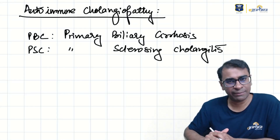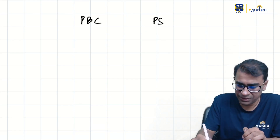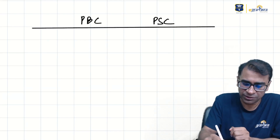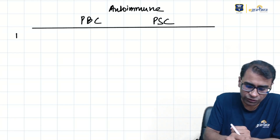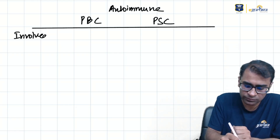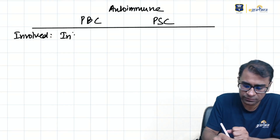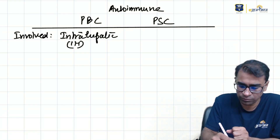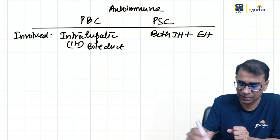Let's discuss these two in table form. Both PBC and PSC are autoimmune diseases. The involved part in PBC is the intrahepatic bile duct, whereas in PSC it is both intra- and extrahepatic bile ducts.